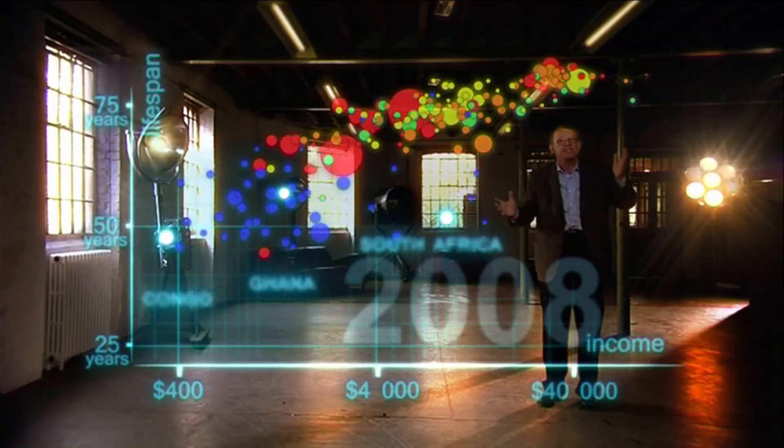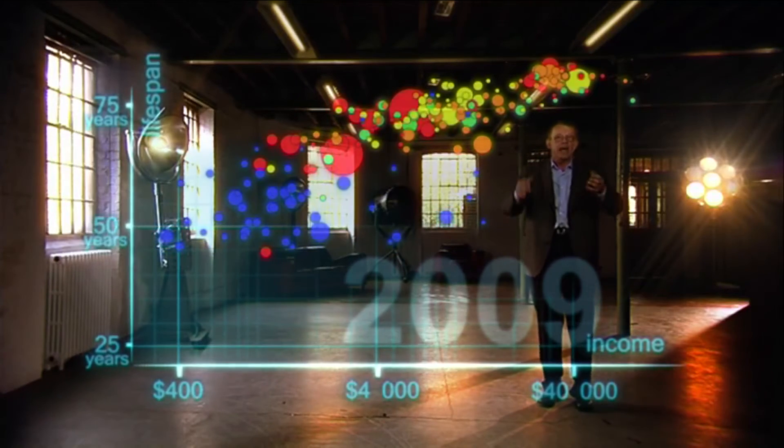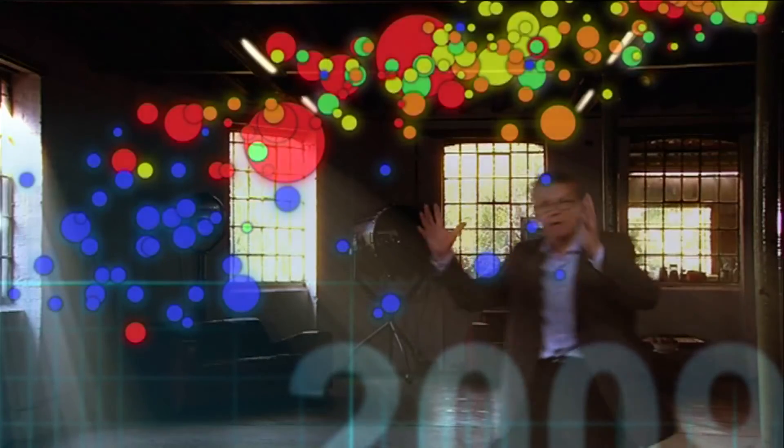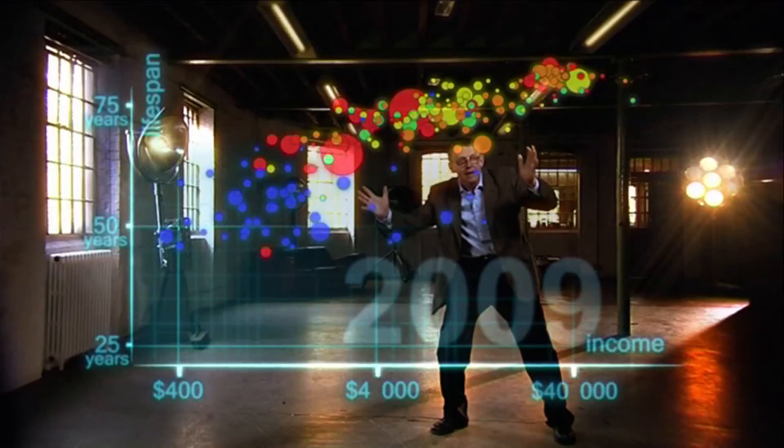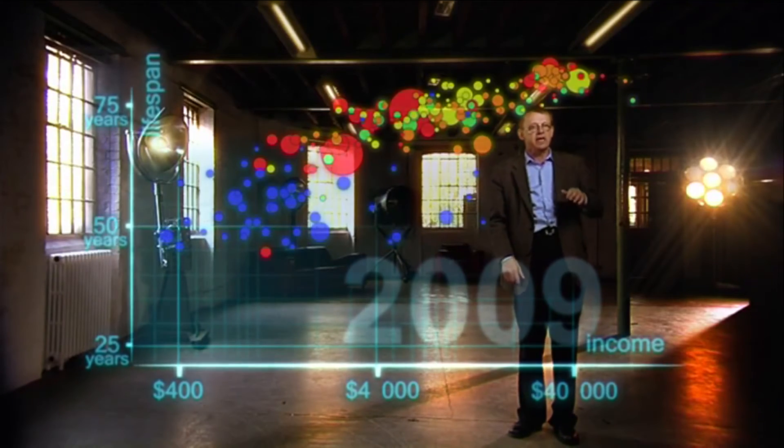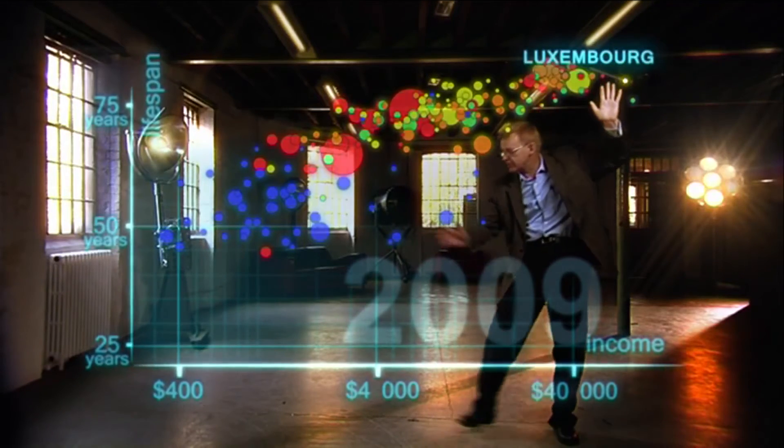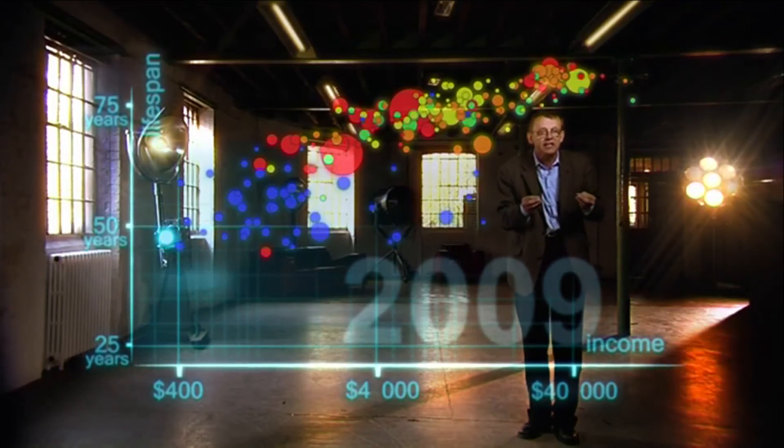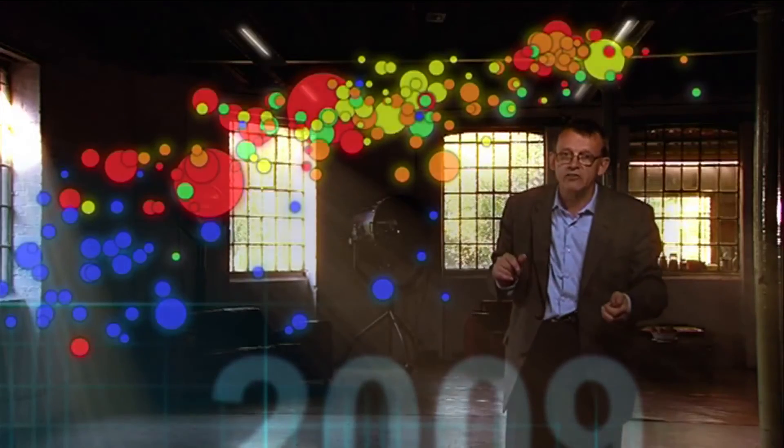And now we can see the world today in the most up-to-date statistics. Most people today live in the middle. But there are huge differences at the same time between the best of countries and the worst of countries. And there are also huge inequalities within countries. These bubbles show country averages.